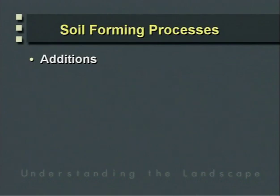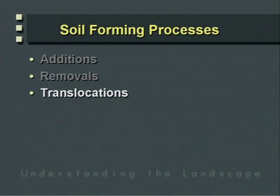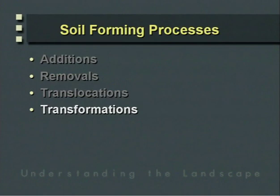Soil forming processes can be lumped into four categories. The first are additions to the soil. The second are removals from the soil. The third category includes translocations within the soil. And the final category deals with transformations. These four categories encompass all soil forming processes.